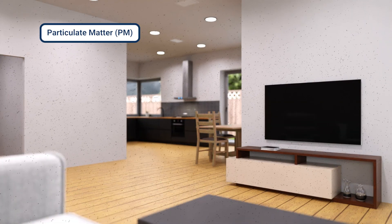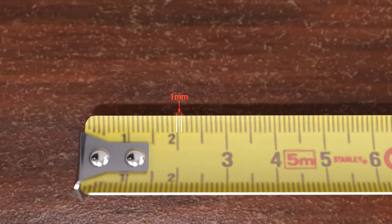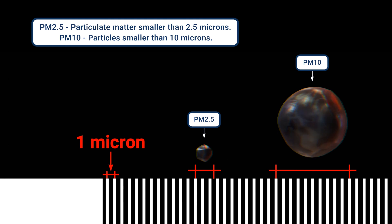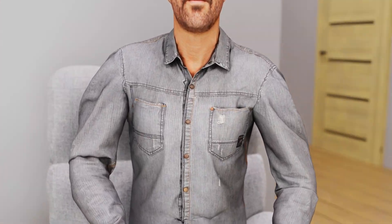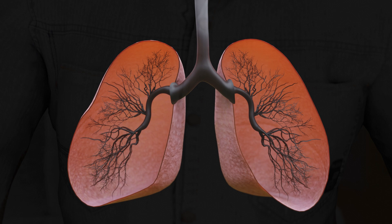Particulate matter — PM2.5 and PM10. Dust and particles you can easily see can be irritating, but the real health hazards are the ones you often cannot see. PM2.5 refers to particulate matter smaller than 2.5 microns, while PM10 refers to particles smaller than 10 microns. PM2.5 is particularly harmful due to its ability to penetrate deep into the lungs and potentially enter the bloodstream. Exposure to particulate matter can cause respiratory issues, cardiovascular problems, and exacerbate asthma.